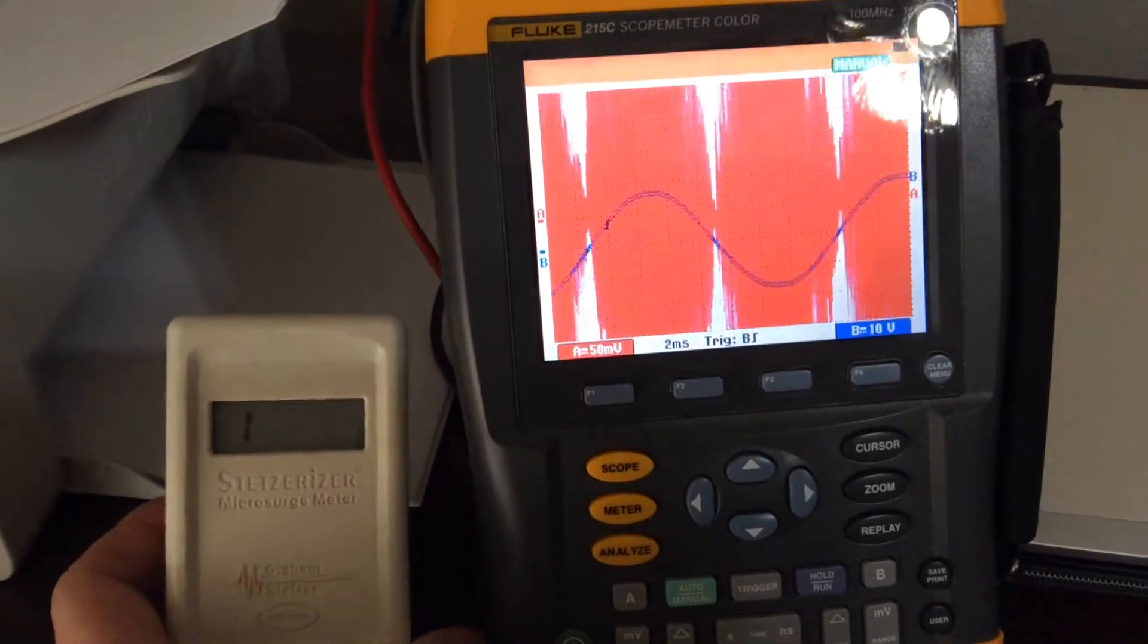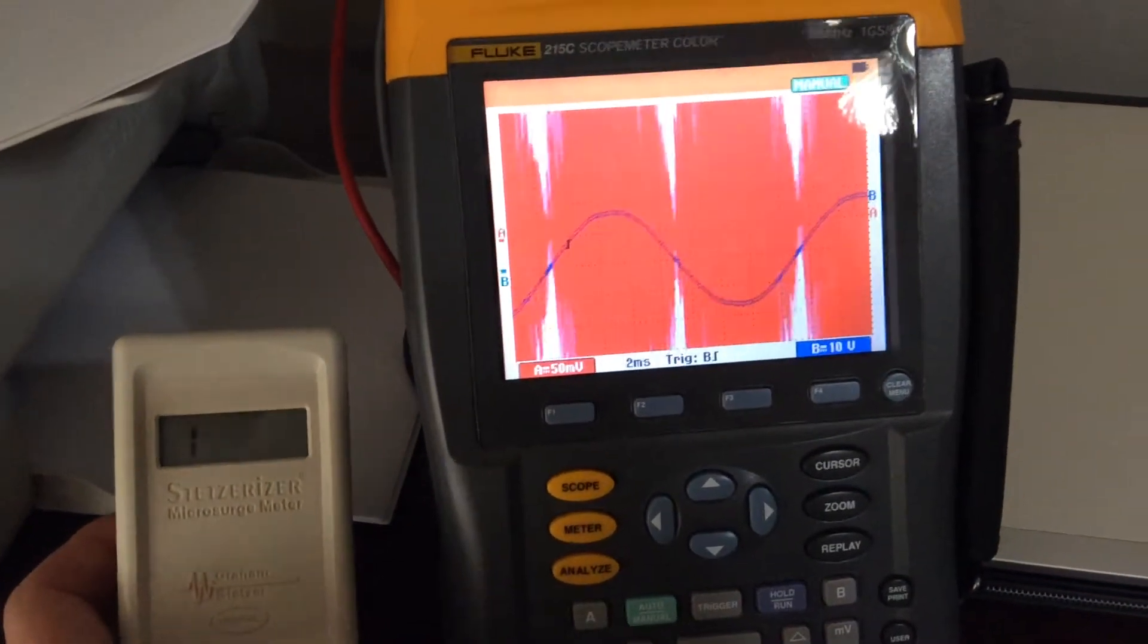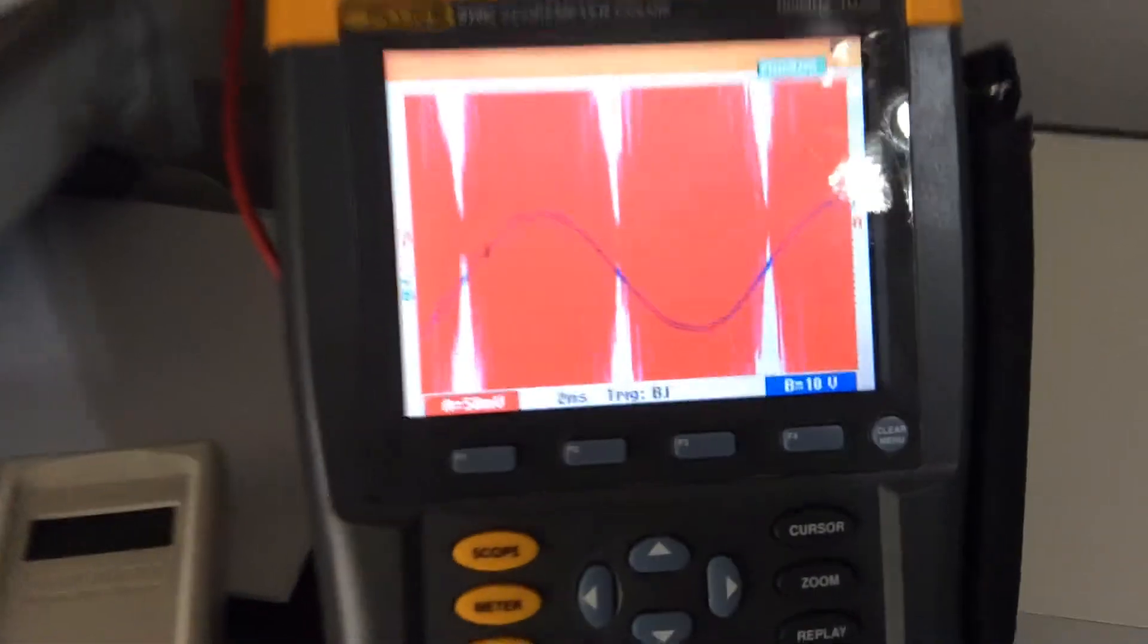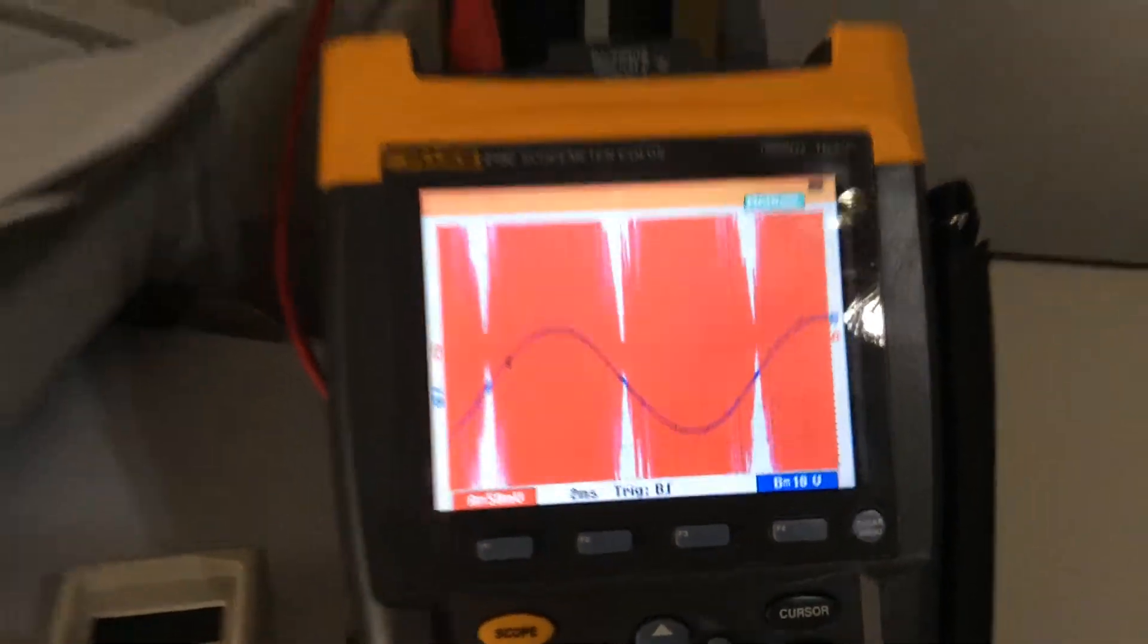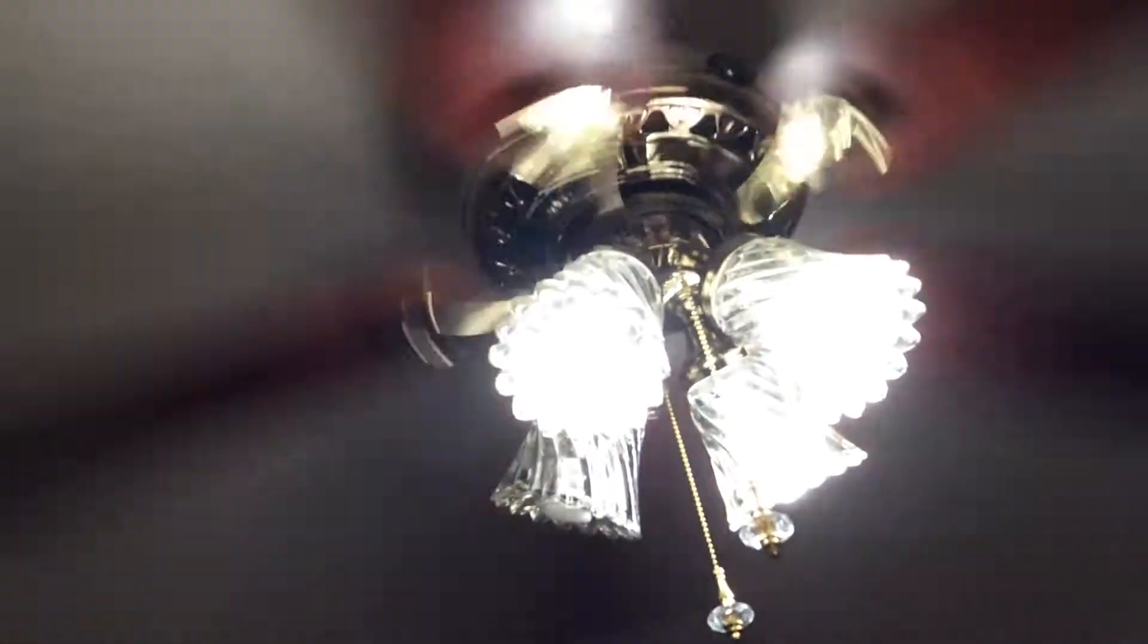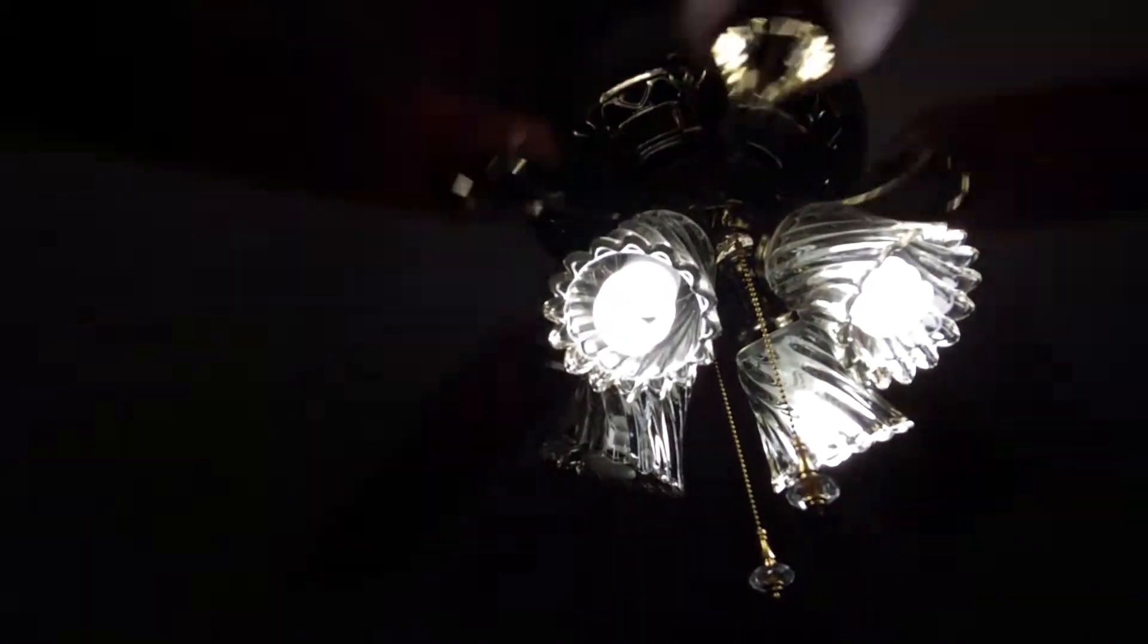Alright, so we're up over 2,000 GS units, and as you can see the screen went red. This is what's causing it. There are these CFLs.